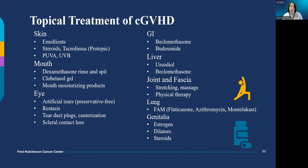Vaginal dilators can be helpful if tightness develops from chronic graft-versus-host disease. The FAM regimen of inhalers and oral medications is very well tolerated and has been shown to stop the lung function decline of chronic graft-versus-host disease of the lung.